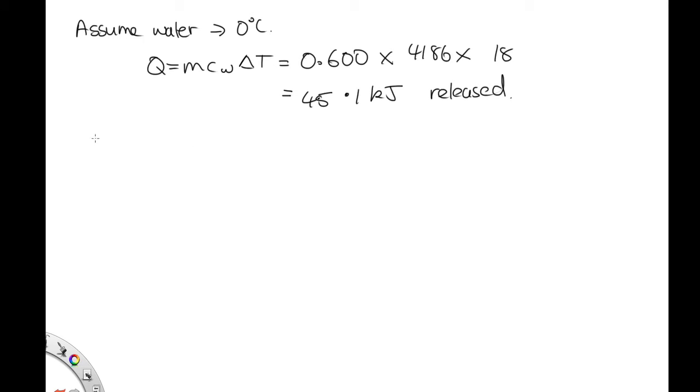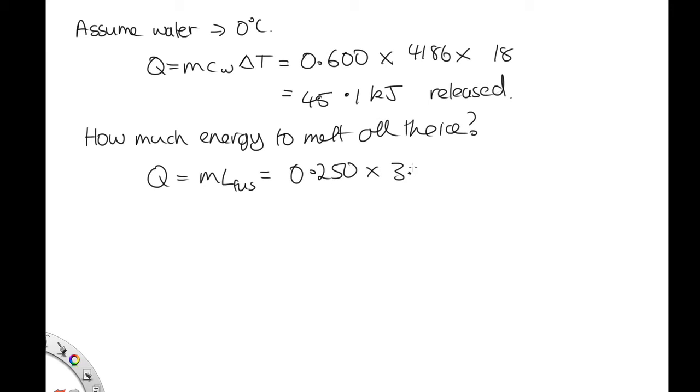Now let's see how much energy we need to melt all the ice. Q equals m L_fusion. We've got 250 grams of ice, so that's 0.250 times 3.33 times 10^5.